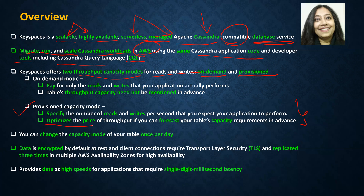For many of us in the beginning, we do not know what our capacity is going to be, so you can always start with on-demand mode. Once your application has been running for a couple of months and you have knowledge of your peak and off-peak capacity, you can convert to provisioned capacity mode. Or vice versa — if your estimates were totally off or you had a sudden burst of requests, you can always change it back to on-demand mode.